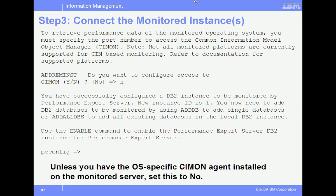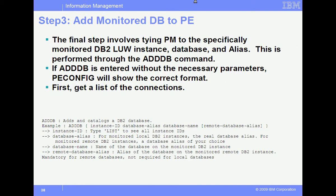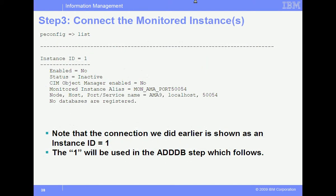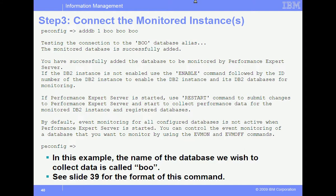We now move to the second phase by adding the monitored instance using the adddb command. But before we can do this, we need to figure out the server number in the PE server configuration, which is done with a list command. After we performed the server connectivity portion earlier, we see that PE server assigned an ID of 1. We will use this 1 in the adddb command. In this example, we are adding a database called Boo with an alias of Boo to the PE server. The format for this command is adddb, instance ID number, database alias, database name, and the remote database alias — that is the remote name as it would be on the monitored instance. Hence the reason we are repeating this database name called Boo three times.